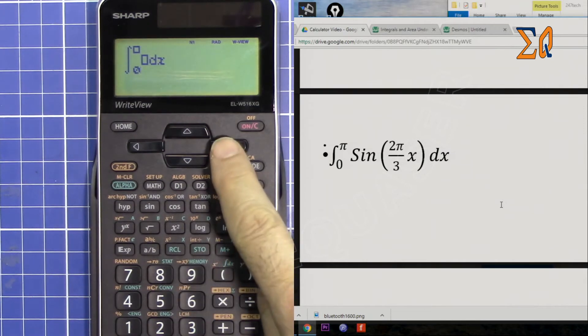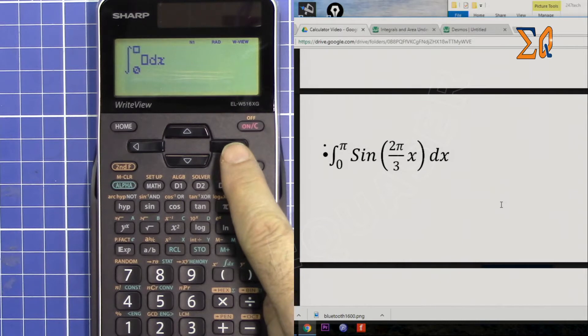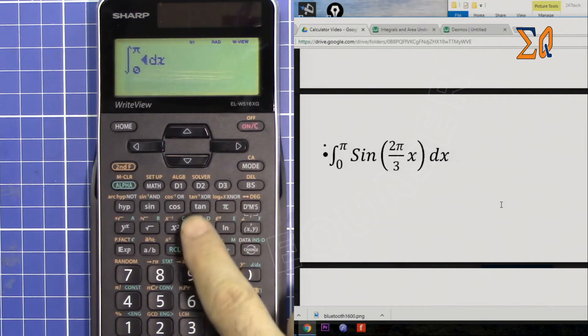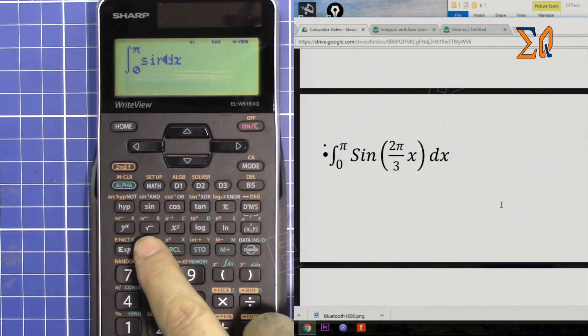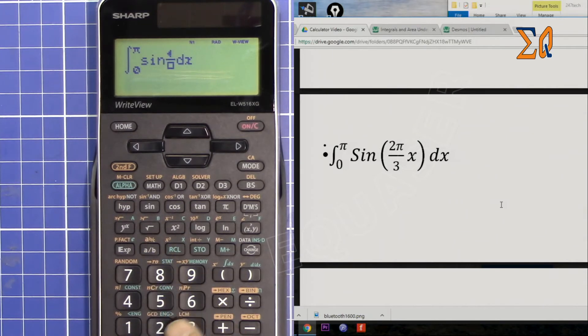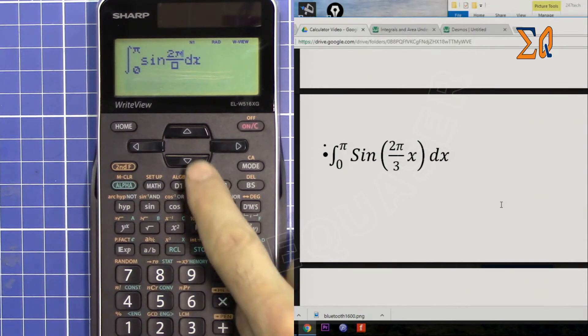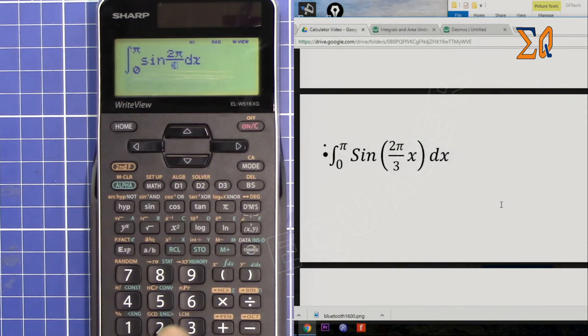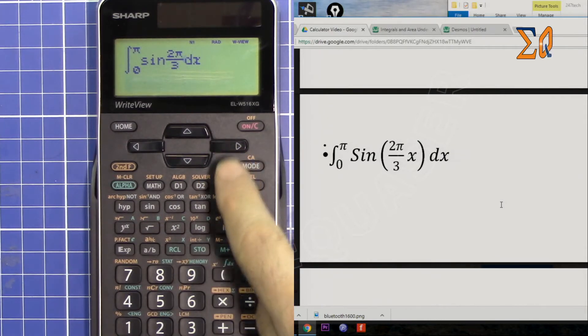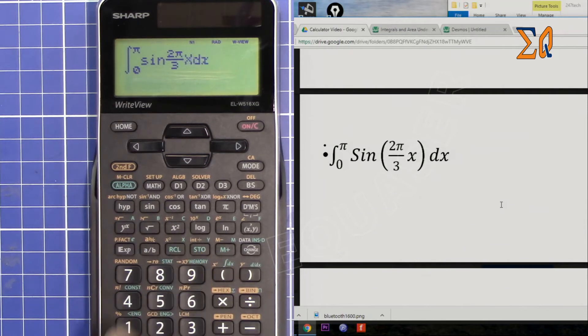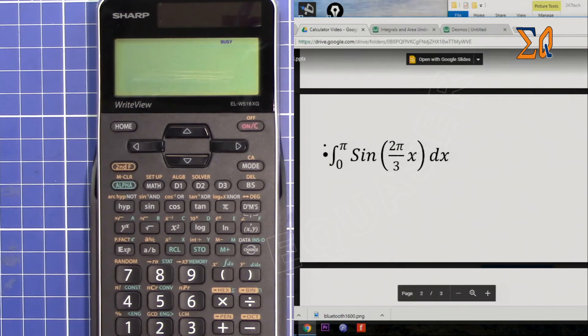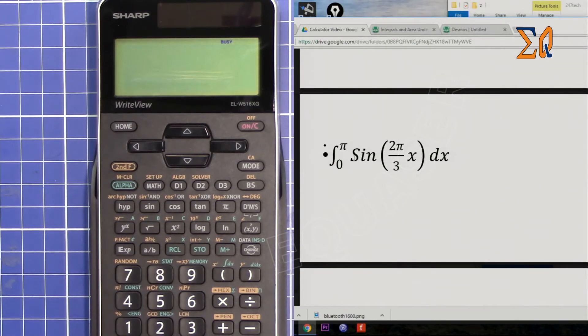Again, Alpha and then Integral. Lower bound is zero, go to the right, then enter π and to the right. Sine, fraction 2π/3, so 2 and then π. Come to the denominator, then go to the right and put X. Press equal sign. Remember the value must be in radians to properly evaluate the angle.